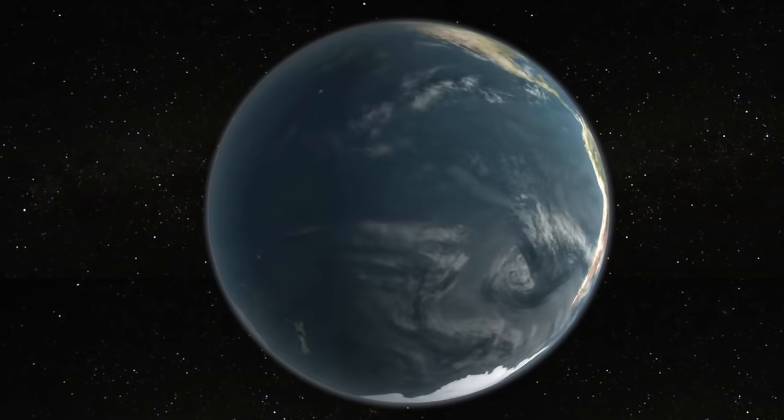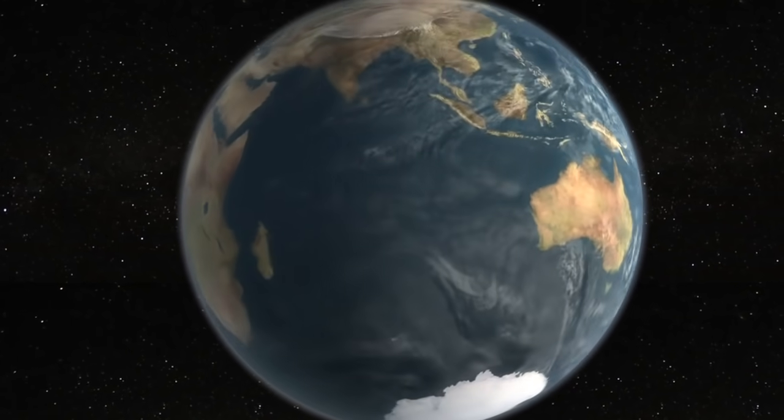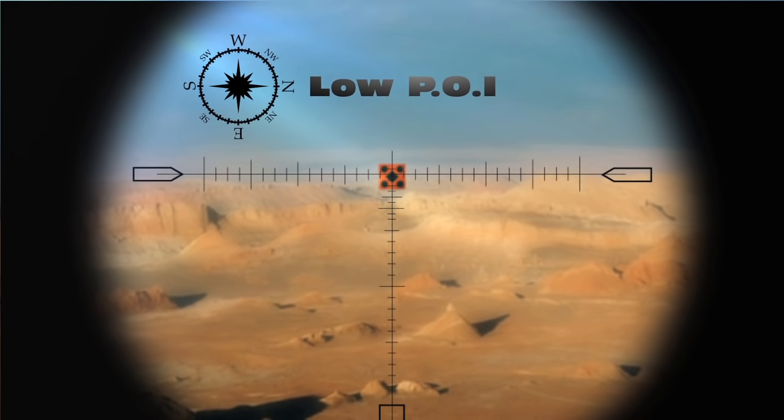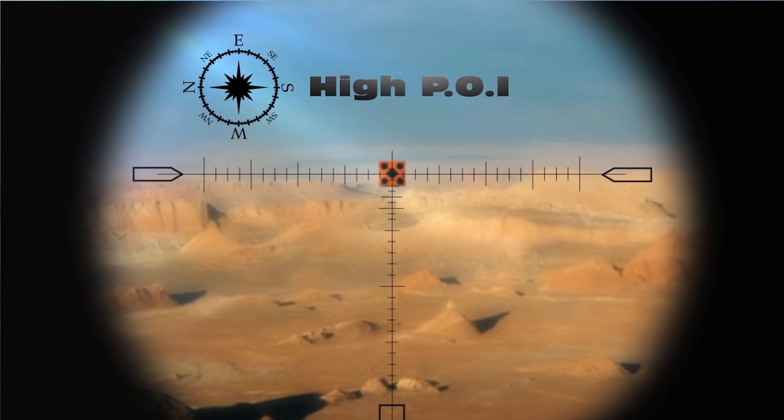The earth rotates from the west to the east, so what that's going to do to our targets is: if you're shooting west, your target is going to rotate up and towards us, which is going to cause the bullets to hit lower. And if you're facing east, the target is going to be dropping and slightly moving away, which is going to cause the hits to be higher.